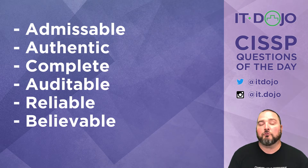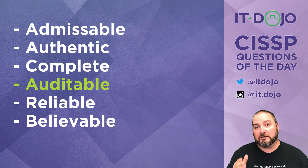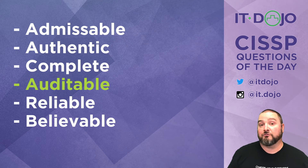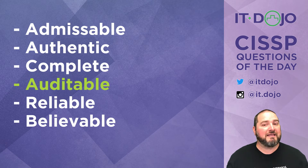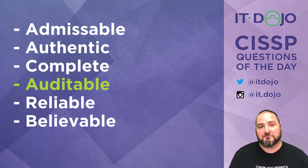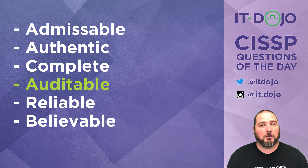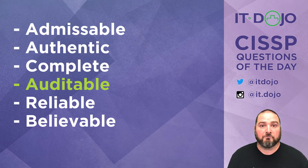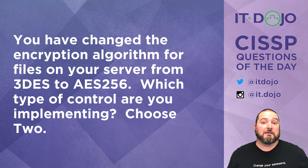The answer we're looking for — what is NOT one of the five rules — is auditability. Evidence does not have to be auditable. It does however have to meet the other five that you see listed here, so know them and know what each of them means. I've put a helpful link from SANS down below — give that a read, and unless you're a lawyer it'll tell you almost everything you need to know from a CISSP exam perspective. Check it out.